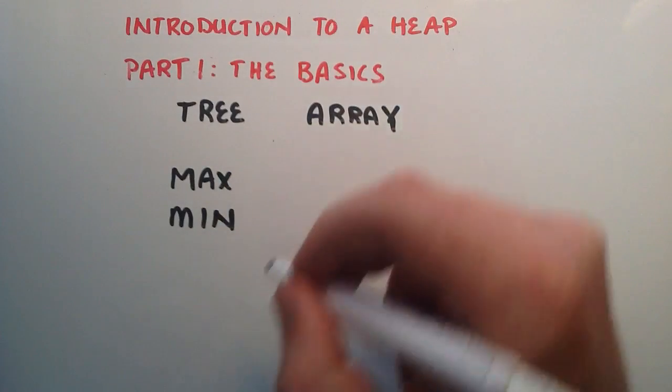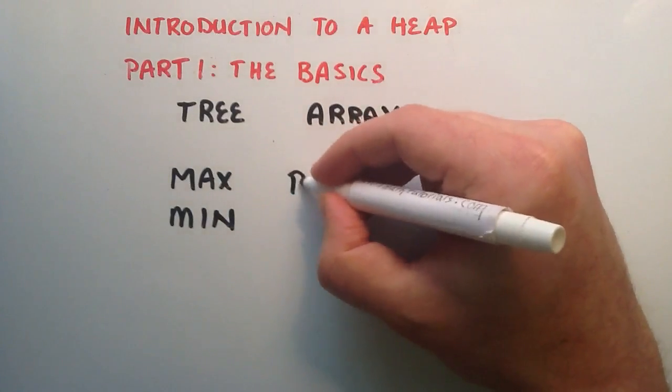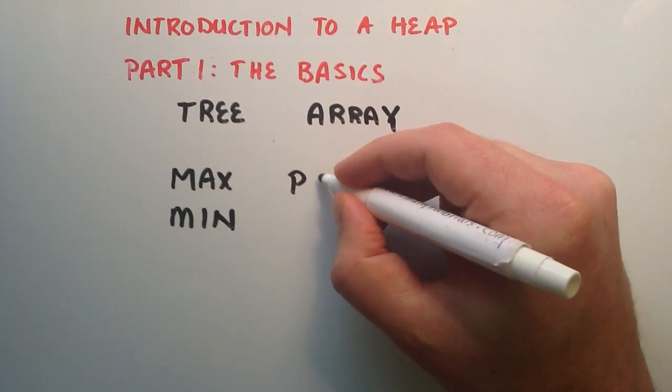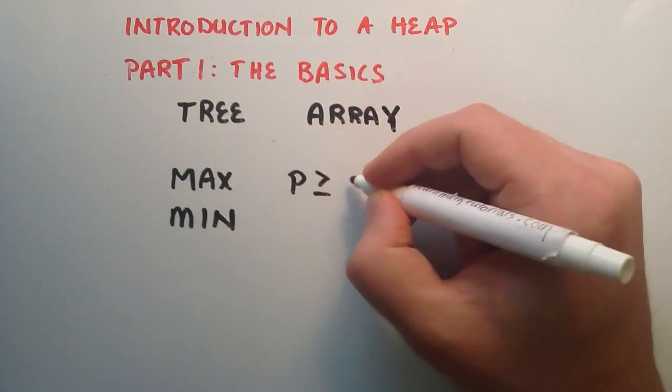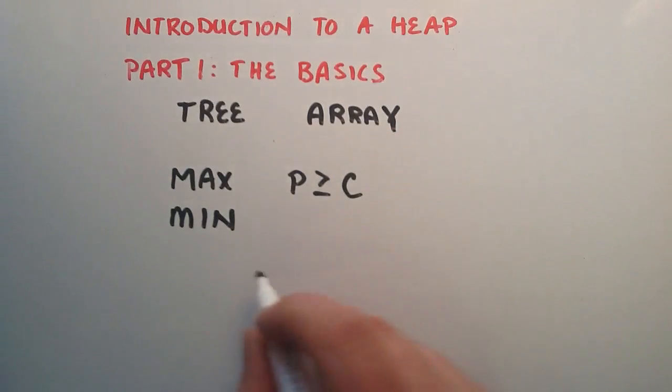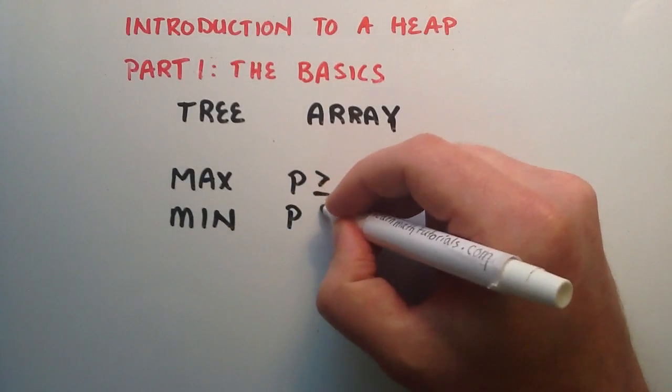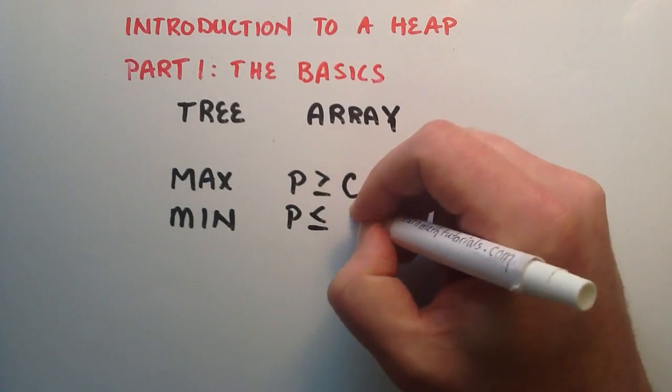And so a max heap has a property, and it basically says that any parent node is going to have a value that is greater than or equal to its children. And for a min heap, any parent node is going to have a value that is less than or equal to its children.